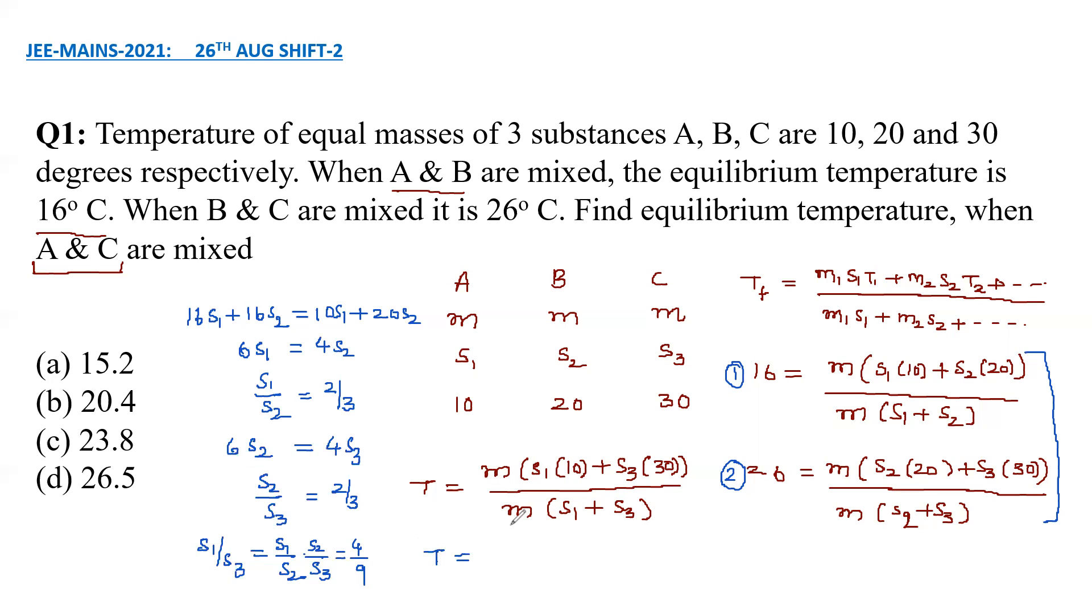So here we can use it. T is equal to, after cancelling M, we have S1 by S3 into 10 plus 30 divided by S1 by S3 plus 1, which is 40 by 9 plus 30 divided by 1 plus 4 by 9, which is 13 by 9, which is 270 plus 40.